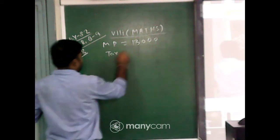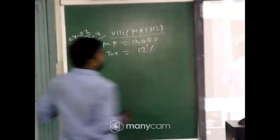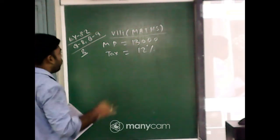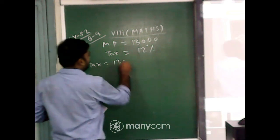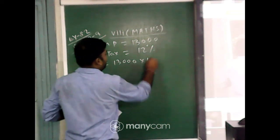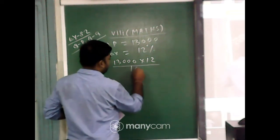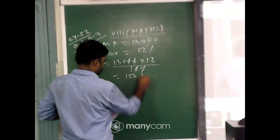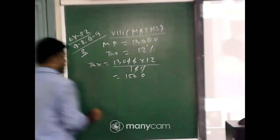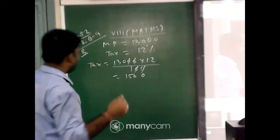And tax amount, tax equals 12 percent. Now what is the amount? Tax equals 13,000 into 12 percent. For removing that percentage sign I have to write 100, so 13,000 times 12 by 100 equals 1,560.